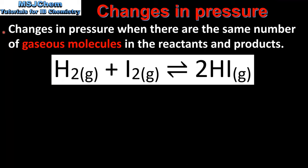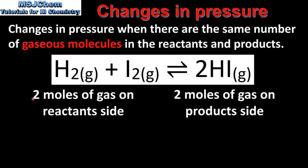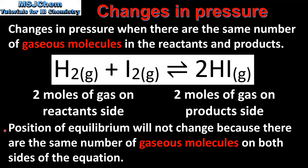In the last example we look at changes in pressure when there are the same number of gaseous molecules in the reactants and products. In this reaction we have 2 moles of gas on the reactant side and 2 moles of gas on the product side. So the position of equilibrium will not change because there are the same number of gaseous molecules on both sides. If we have equal numbers of gaseous molecules in the reactants and products, changes in pressure have no effect on the position of equilibrium.